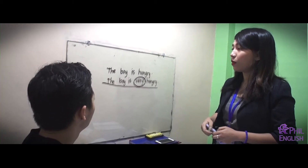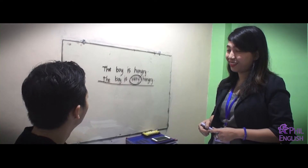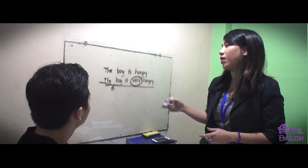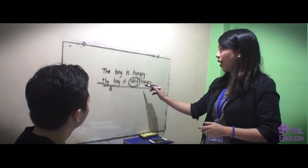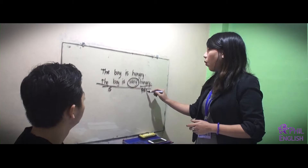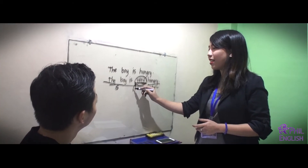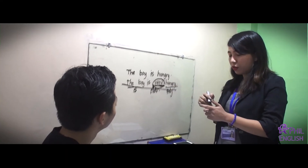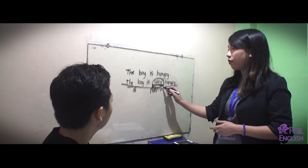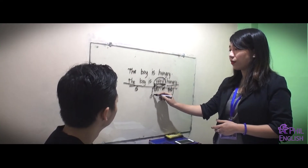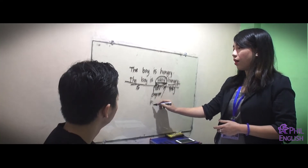Yes. So in this sentence, which is the subject? The boy. The boy is the subject. Which is the adjective? Hungry. So what do we call this word 'very'? Adverb. Adverb — yes, actually yes, this is an adverb. So there are many kinds of adverbs. This adverb is what we call an adverb of degree, or intensifier.